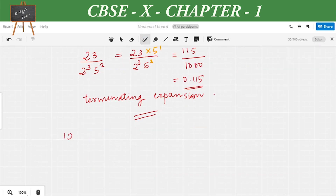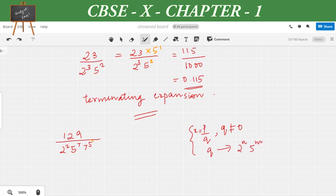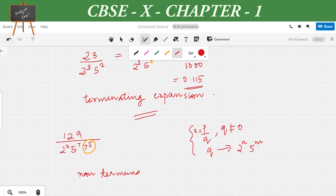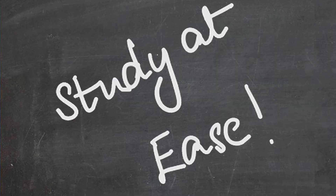The last question for today's session is 129/(2² × 5⁷ × 7⁵). We know that if a rational number x = p/q can be expressed where the prime factorization of the denominator is in the form 2^n × 5^m, it is terminating; otherwise it is non-terminating. In this case, the denominator contains 7⁵, so we can conclude that the decimal expansion of this fraction is non-terminating.